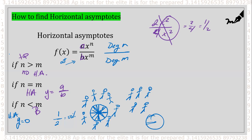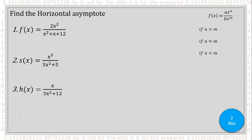Three cases to remember: if the degree in the numerator is bigger, you have no horizontal asymptote — check for obliques. If the numerator and denominator have the same degree, use the ratio a over b of leading coefficients. And if the degree is bigger in the denominator, your horizontal asymptote is y equals zero. Go ahead and pause and try to find these horizontal asymptotes for yourself.